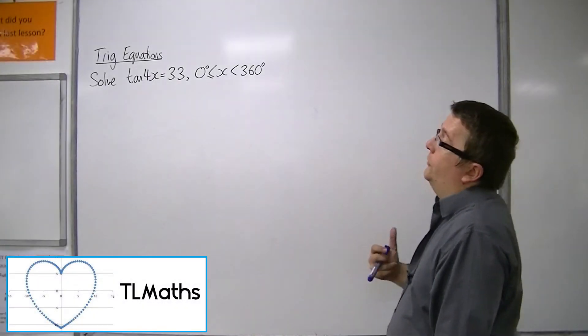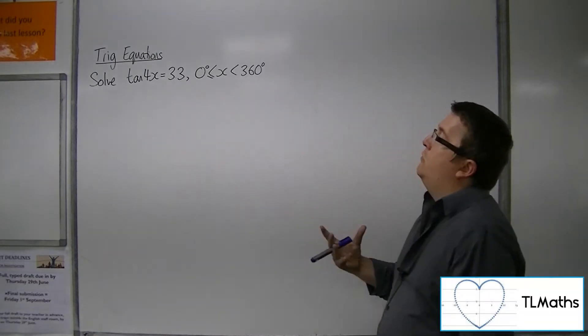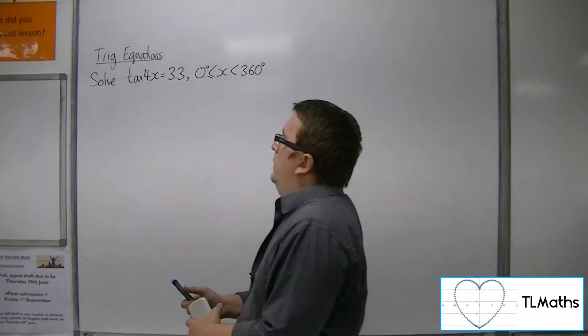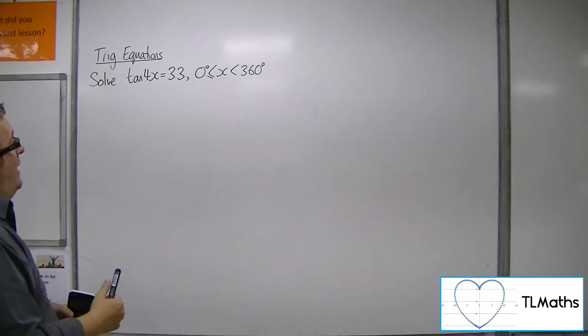Okay, so now we're going to solve tan of 4x equals 3.3 between 0 and 360. This is a stretch by factor of quarter parallel to the x-axis.